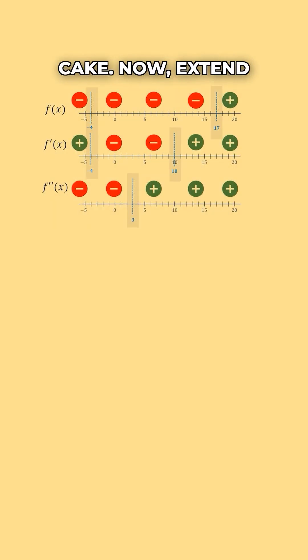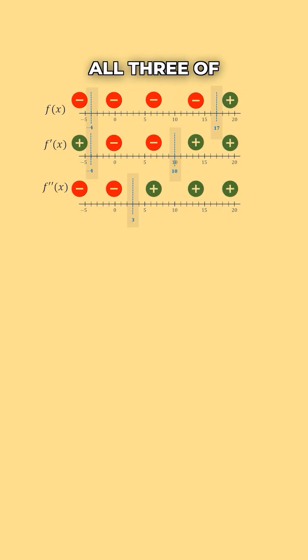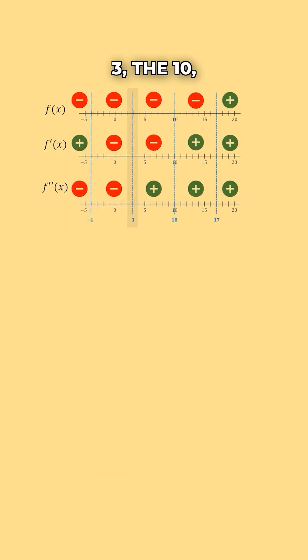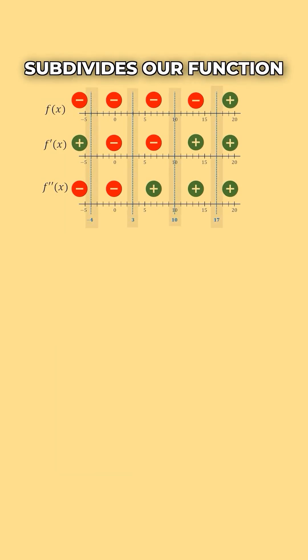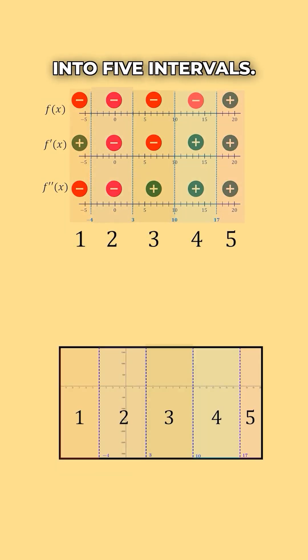Now, extend any of the dotted lines for all 3 of the levels. The negative 4, the 3, the 10, and the 17 subdivide our function into 5 intervals.